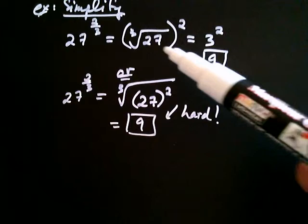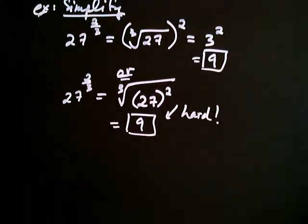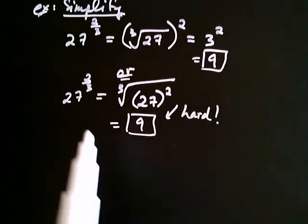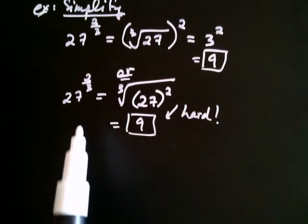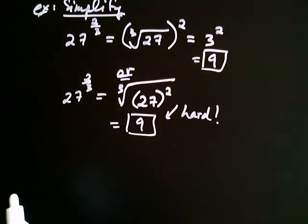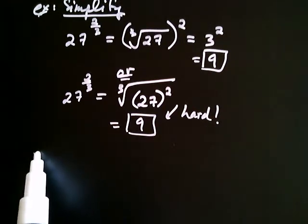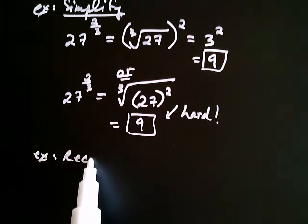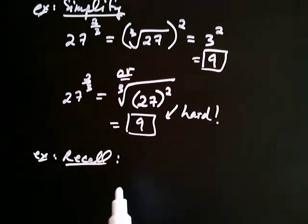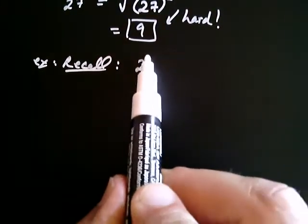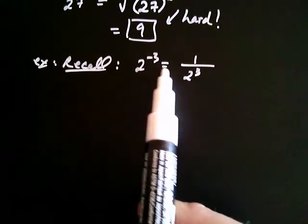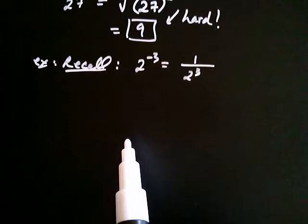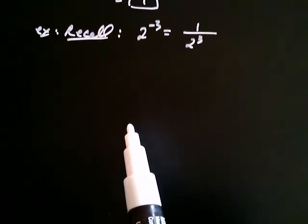That's why we often prefer to take the root first, so we can deal with smaller numbers. Now there's one more situation to talk about with rational exponents. A rational exponent is just an exponent that's a fraction — in this case a positive fraction. But you might be wondering: is it possible to have a negative rational exponent? The answer is of course yes. Recall from the previous video on negative exponents that 2 to the negative third is the same thing as 1 over 2 to the third — a negative exponent becomes positive when you put the whole thing in the denominator.